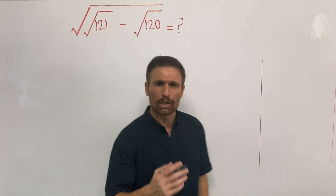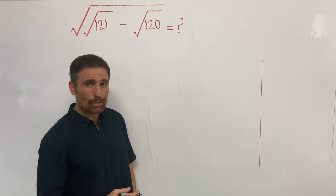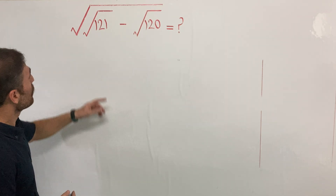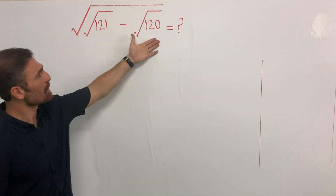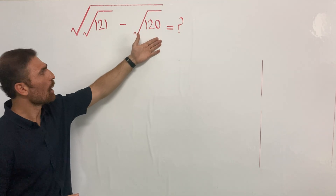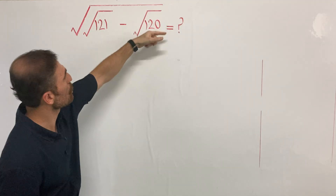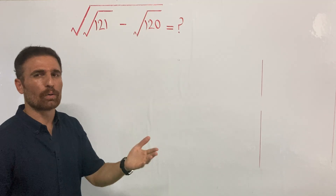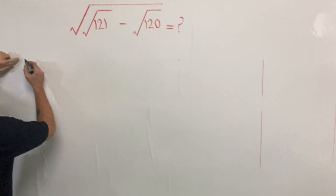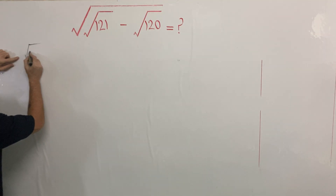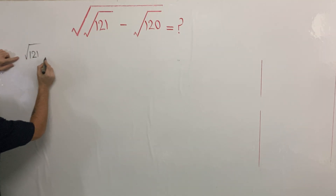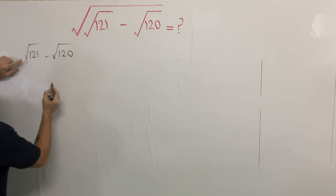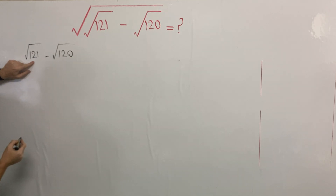What is the question and where should we start the solution? The question says: find the value of the second root of this expression. To solve this, I'm going to start my solution by working on the inner part. Let me rewrite it — it says second root of 121 minus second root of 120.